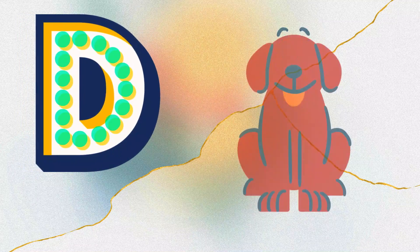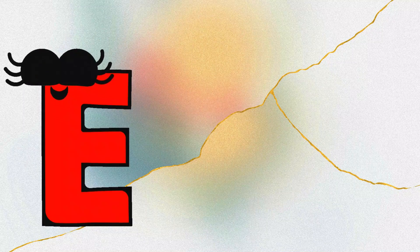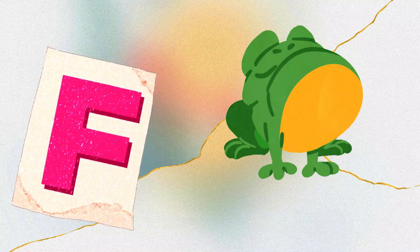C is for c-c-car. D is for d-d-dog. E is for e-e-elephant, and F is for f-f-frog.